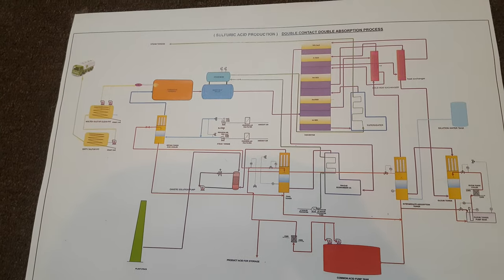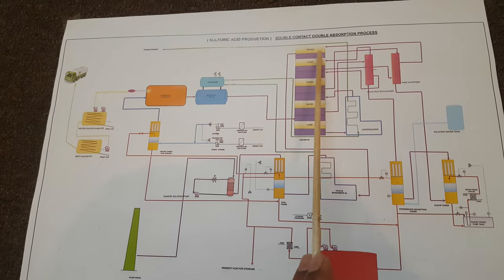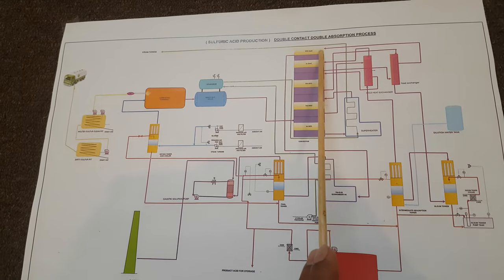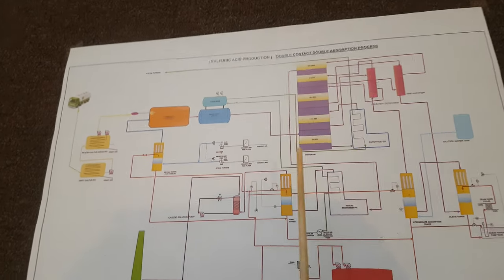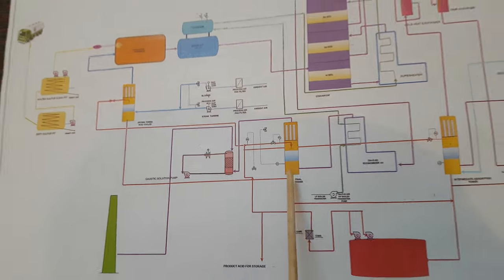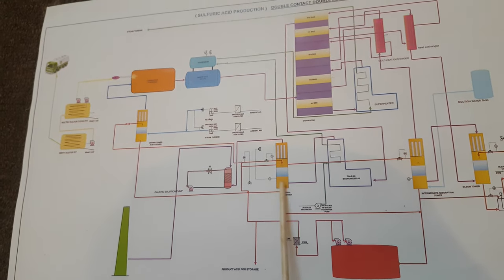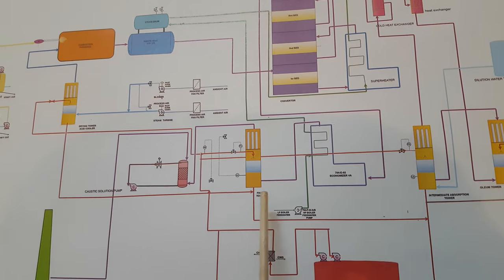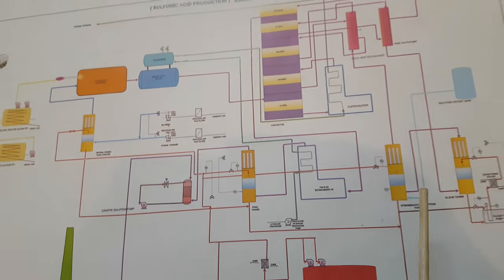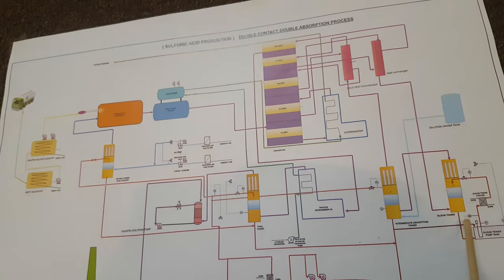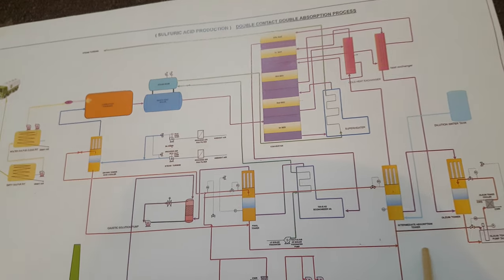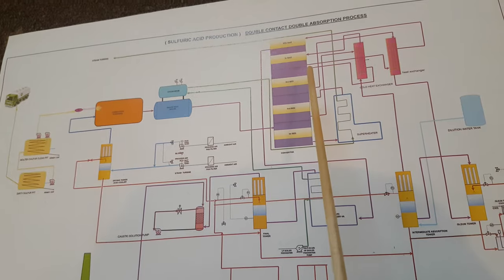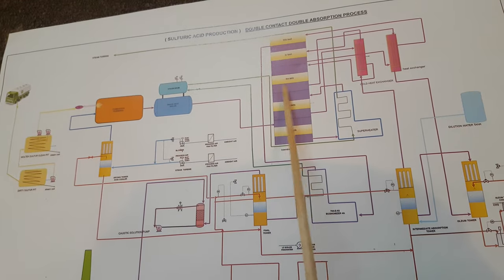This was the overview of the diagram and production of sulfuric acid — how we manufacture sulfuric acid by double contact double absorption. The name itself shows that double absorption takes place: first absorption in the intermediate absorption tower and oleum tower, and the second in the final tower. It is double contact because after the third bed we send to the intermediate tower, then again to the fourth bed and fifth bed.